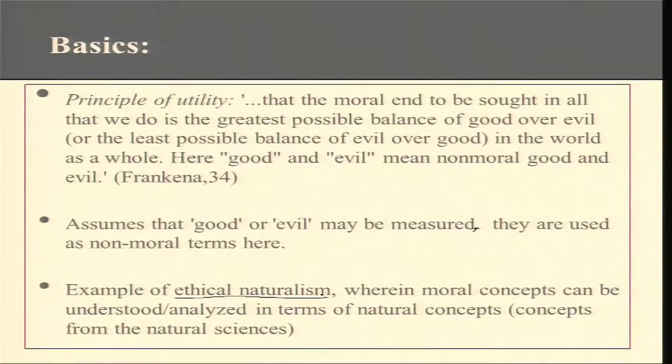What is it for a theory to be a Utilitarian theory? What makes one a Utilitarian? A Utilitarian is one who is searching for utility — not usefulness per se, but that act is high on utility that brings about the desired goodness. What is the desired goodness? Well, Utilitarianism is mostly tied up with Hedonism, such that pleasure or happiness turns out to be the most desired consequence.